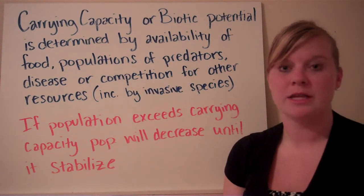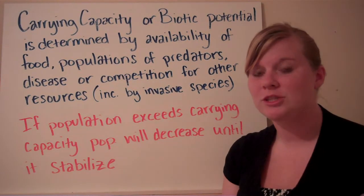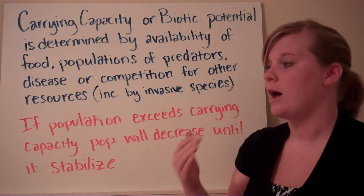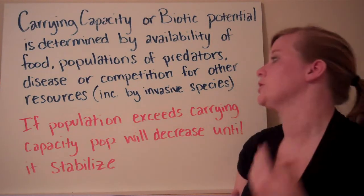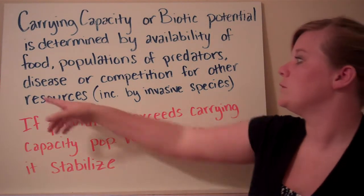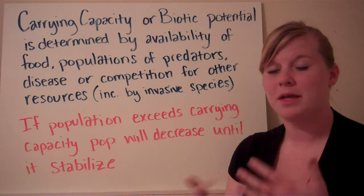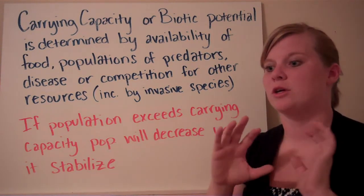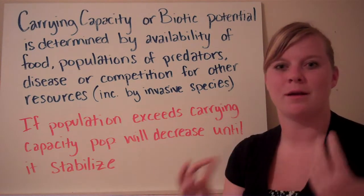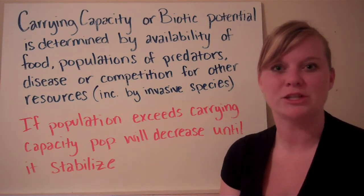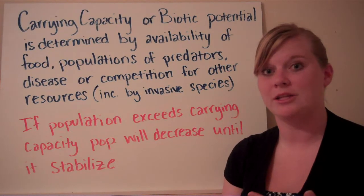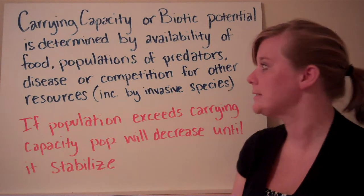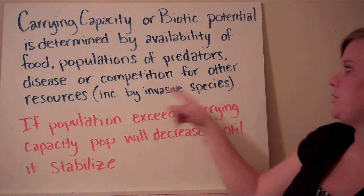The same applies to populations of predators. If you're looking at the deer population and there are lots of wolves or other predators in the area, those deer populations are going to go down as predator numbers go up. Disease is another factor that can limit carrying capacity — at a certain population density, disease is actually more likely to occur, which puts a cap on how many animals of that species you can have.